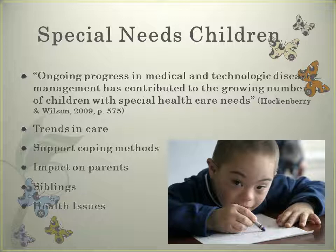To involve the siblings, find ways to include them in the care and decisions, but also limit their caregiving responsibilities. Help them develop competencies to teach the child new skills, or provide opportunities to advocate for the ill child, and allow the sibling to set their own pace of involvement. With sibling relationships, value every child and avoid comparisons. Be fair with discipline, attention, and resources. Legitimize reasonable anger and respect reluctance to be with or include the ill child in activities.